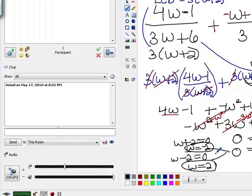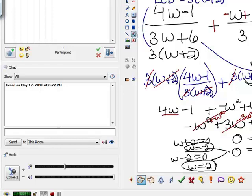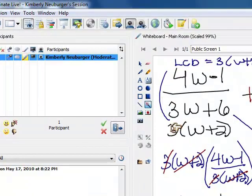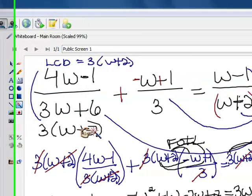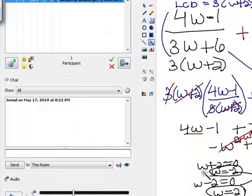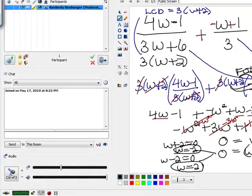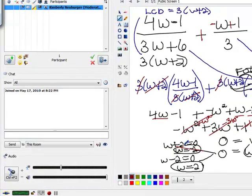But before we do anything else and say what our solution is, we need to check those solutions and see if we would have any extraneous solutions. And I notice that if I take a look at my denominators in the original expression, negative 2 would make this 0. It would also make this 0. So negative 2 is the restriction on our w's, and I notice negative 2 is one of our solutions. So we will go ahead and just cross that out,